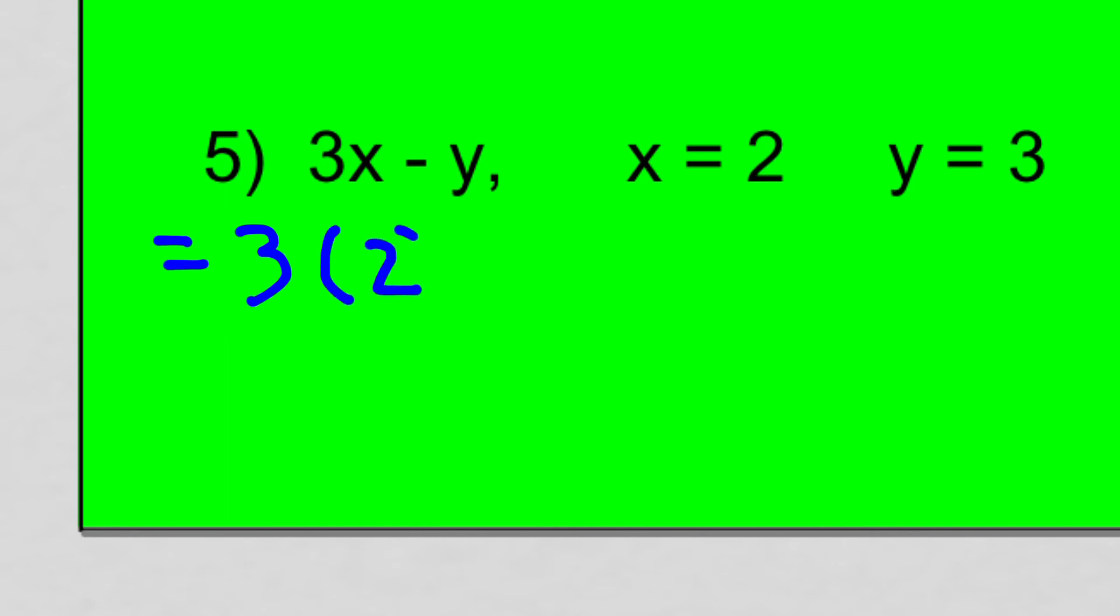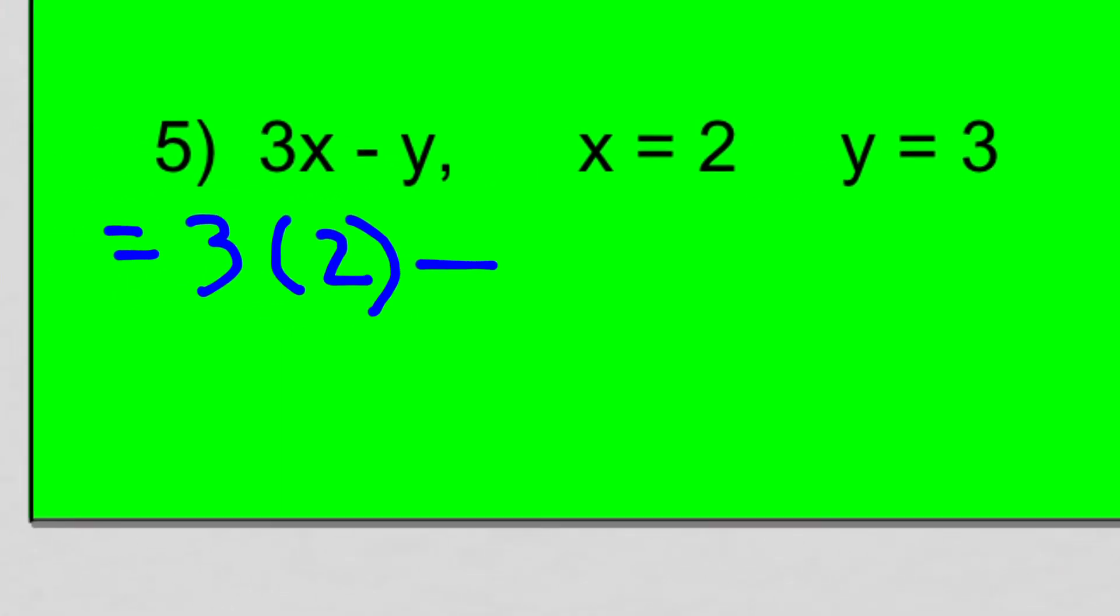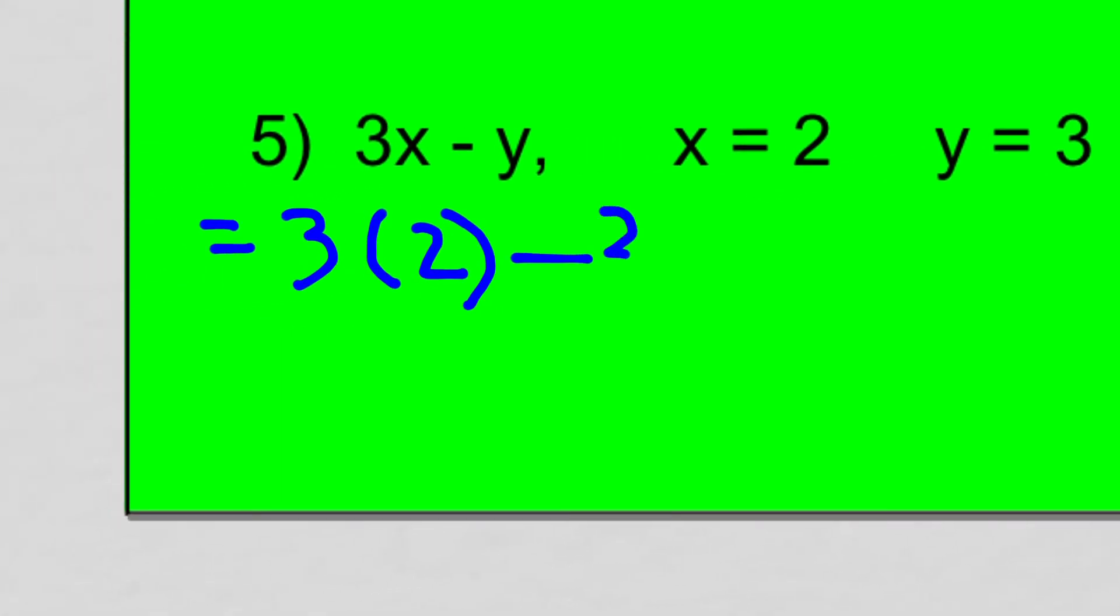So we're going to substitute those values in for x and y. We're going to write equals 3 multiplied by 2 because x is equal to 2 minus 3 because y is equal to 3. We do the multiplication first. So 3 times 2 is 6 minus 3 because we still have the minus 3 from up here. And then still working down the page, that is equal to 3.